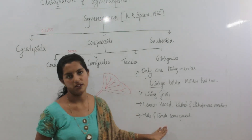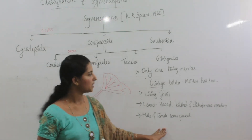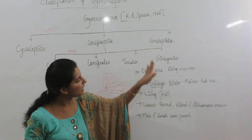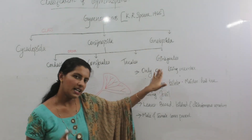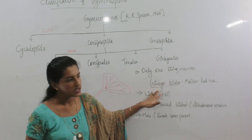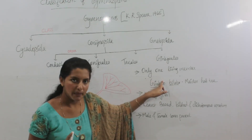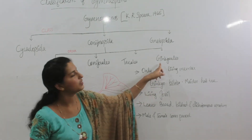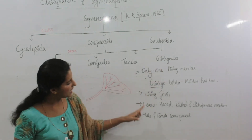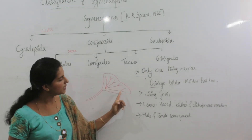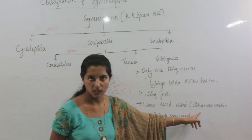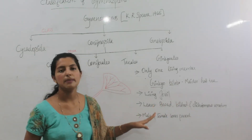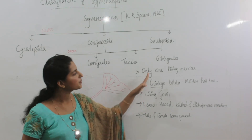Ginkgo biloba possesses both male and female strobili. In the order Ginkgoales, there is only one living member — Ginkgo biloba — so it is called the living fossil of this order. The leaves are bilobed, broad, and show dichotomous venation, and both male and female strobili are present.